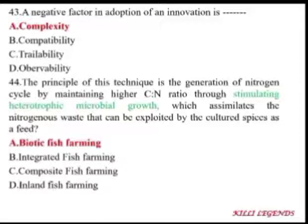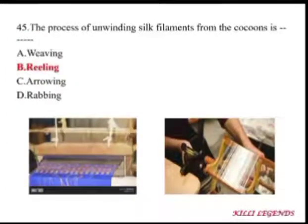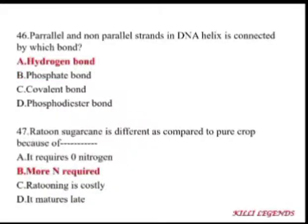The process of unwinding silk filaments from cocoons is known as reeling. The parallel and antiparallel strands in the DNA double helix are connected by hydrogen bonds.